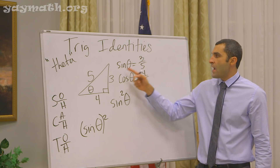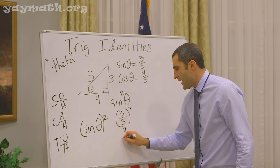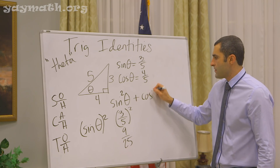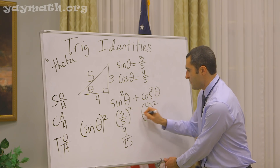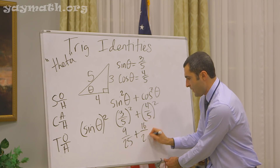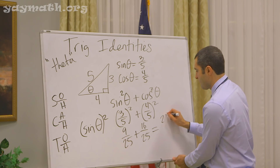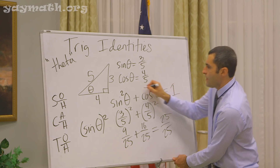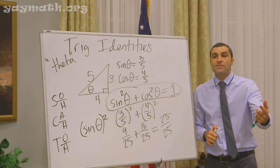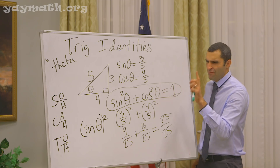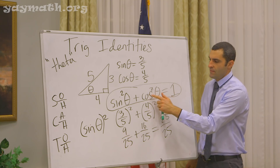Sine squared theta: sine of theta is 3 fifths, so 3 fifths squared is 9 over 25. Plus cosine squared theta: 4 over 5 squared is 16 over 25. And these result in 25 over 25, which is 1. Congratulations — you just figured out the most significant trig identity: sine squared plus cosine squared equals 1. It's called a Pythagorean identity. Sine squared of an angle plus cosine squared of an angle equals 1.